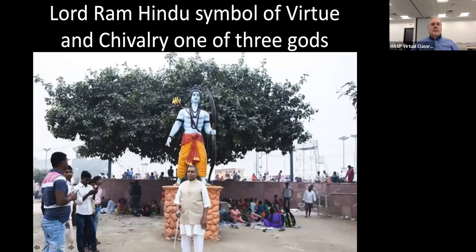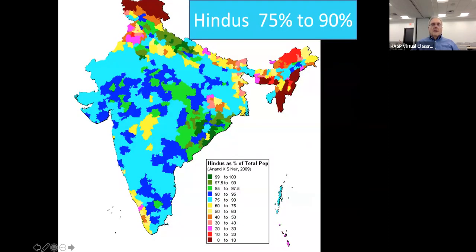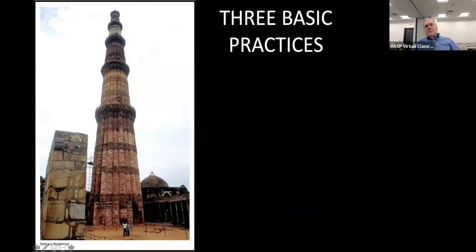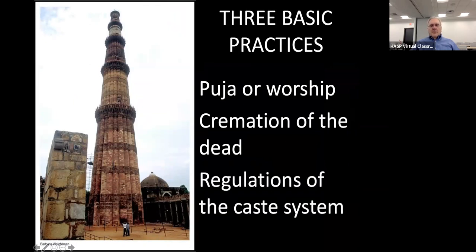Lord Ram is also a very important symbol for the Hindus — representing virtue and chivalry. They celebrate Hinduism with festivals and boat races, great singing and festivities. This gives a quick picture of where the intensity of Hindus is: this color is 75 to 90 percent Hindu. Three basic practices: puja or worship, cremation of the dead, and regulation of the caste system.